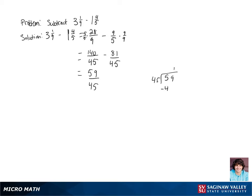So we can do that with long division. Multiply 1 by 45, subtract 45 from 59, we get a remainder of 14.